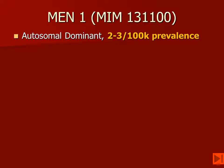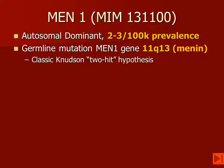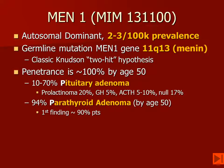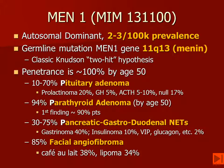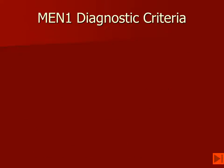MEN1 is an autosomal dominant disorder with a prevalence of 2 to 3 per 100,000, about the same as von Hippel-Lindau disease. The gene has been mapped to 11q13. The penetrance is about 100% by age 50, with most patients having parathyroid adenomas or hyperplasia. Ten to 70% will have pituitary adenomas, which are usually prolactin-secreting tumors, although they may produce growth hormone and ACTH. About 85% will also have facial angiofibromas, which, while very similar to those in tuberous sclerosis, are usually far less numerous.